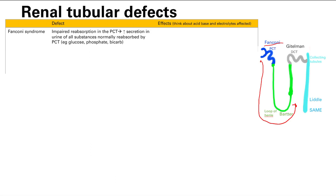So what effects are going to happen? Think about the acid-base and electrolytes affected for all of the ones we're going to see — especially potassium and calcium. In Fanconi syndrome, think about phosphate. What will the pH be? Will there be increased or decreased blood pH? Will there be an acidosis or an alkalosis?